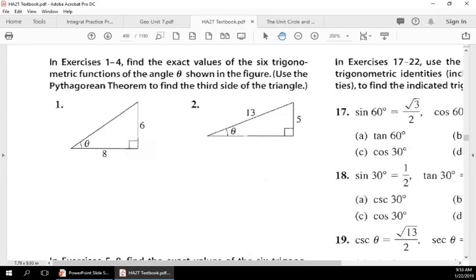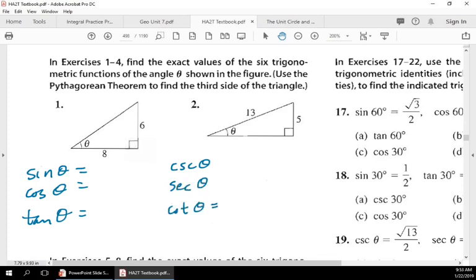The six trigonometric functions are sine of theta, cosine of theta, tangent of theta, and their evil cousins: cosecant of theta, secant of theta, and cotangent of theta. These evil cousins are reciprocals of the originals, the OGs.